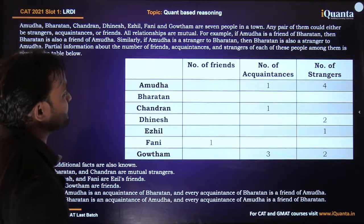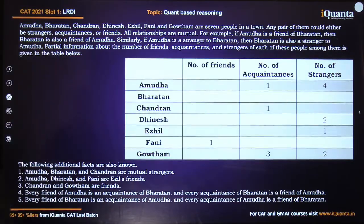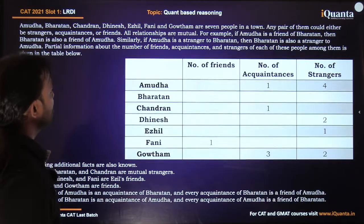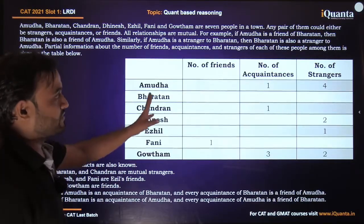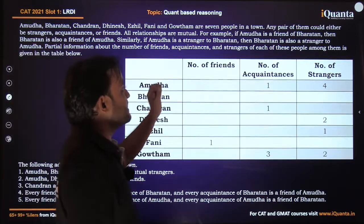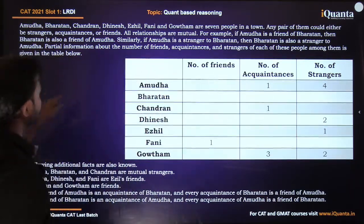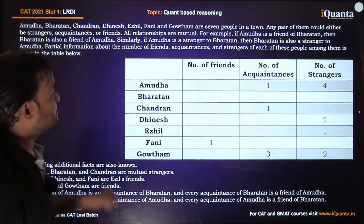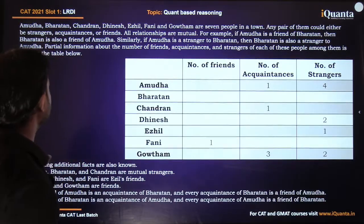A, B, C, D, E, F and G are 7 people in a town. Any pair of them could either be strangers, acquaintances or friends. All relationships are mutual — for example, if A is a friend of B then B is also a friend of A, and if A is a stranger to B then B is also a stranger to A.